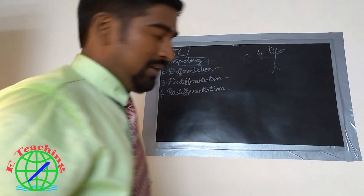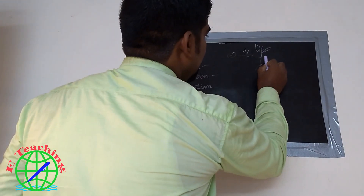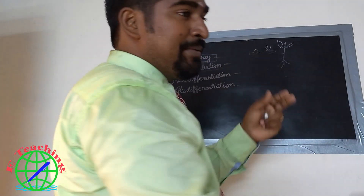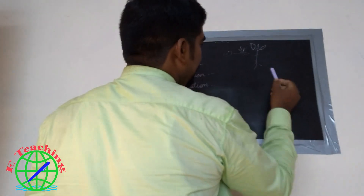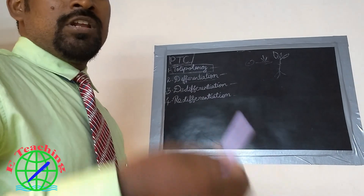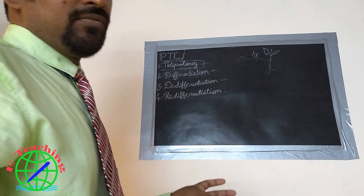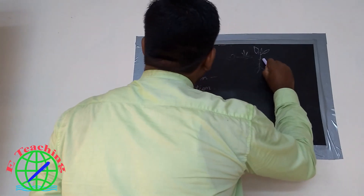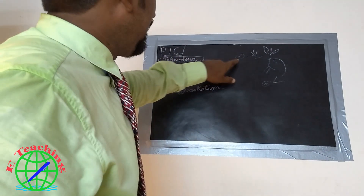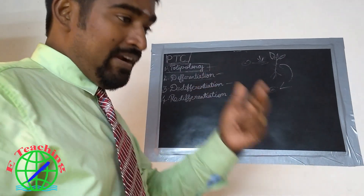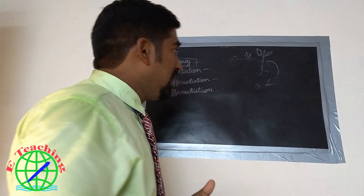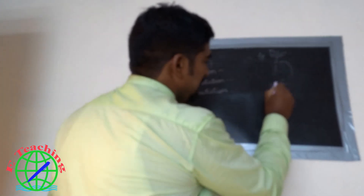What is de-differentiation? De-differentiation occurs in mature cells of plant tissues such as parenchyma, xylem, phloem, and cambium. These differentiated cells can revert back to dividing meristematic cells. A plant cell can revert its state and become a meristematic cell again, which can keep on dividing and form any type of tissue.